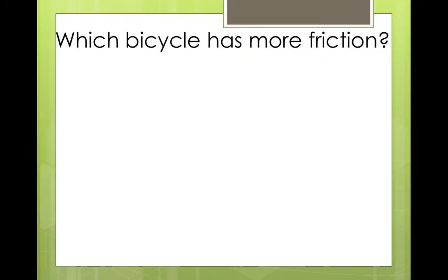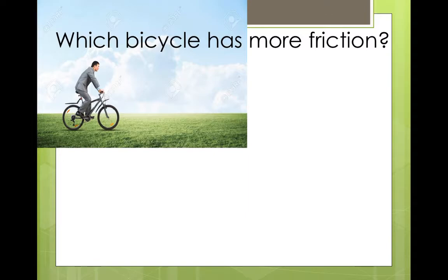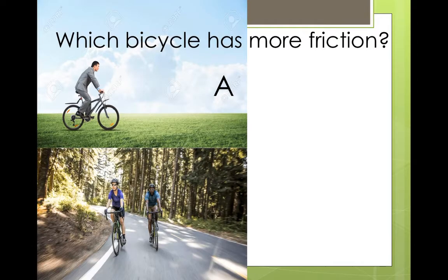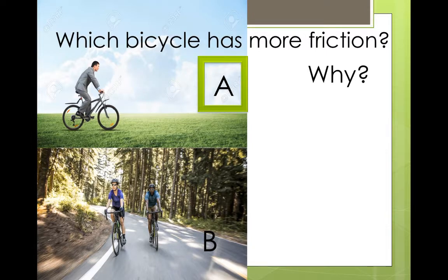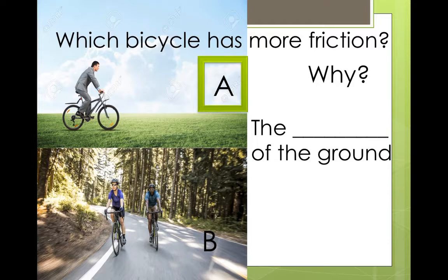Which bicycle has more friction? A or B? More friction. Right? A. Why? The texture of the ground.